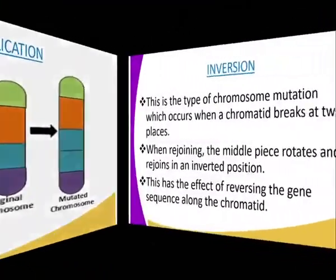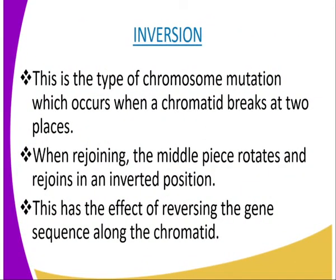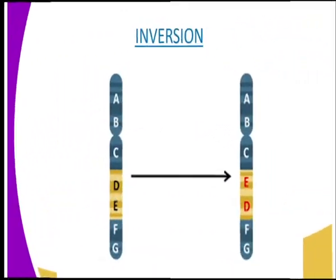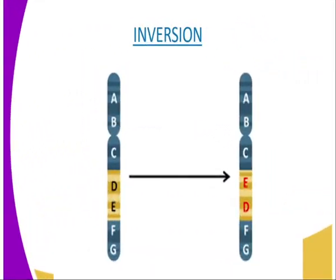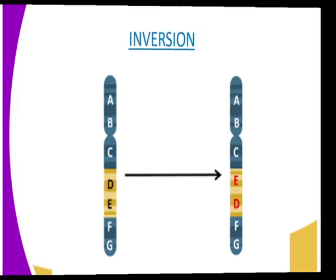The next type of chromosomal mutation is inversion. This occurs when a chromatid breaks at two places, the middle piece rotates, and rejoins in an inverted position. This has the effect of reversing the gene sequence along the chromatid. The consequence depends on the group of genes affected — it might bring closer together genes whose combined effects are advantageous or disadvantageous. As you can see from our diagrammatic representation, on the original chromosome the sequence was DE, but after chromosomal mutation it has become ED. That is what is identified as inversion.